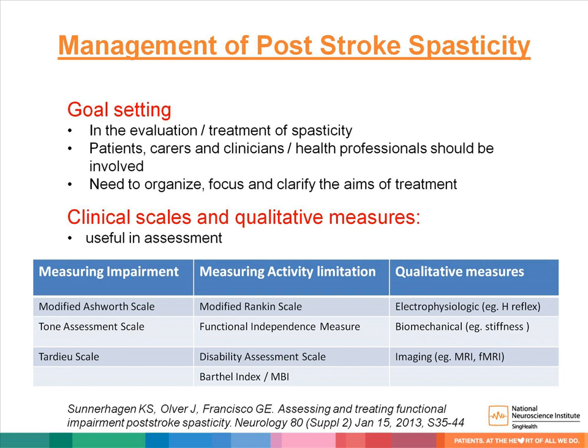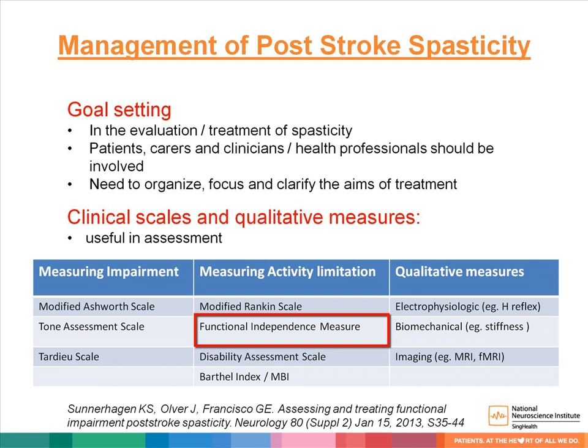Once it is decided that the ill effects are overriding and there is a recognized benefit to treating the spasticity, it is important to assess and record specific measures of the spasticity and its effects. Scales to measure spasticity severity, such as the Modified Ashworth Scale and Tardieu Scale, and those measuring activity limitation such as the Functional Independence Measure, are probably more useful in the clinical setting. This pre- and post-intervention comparison will be helpful in determining if treatment is successful.